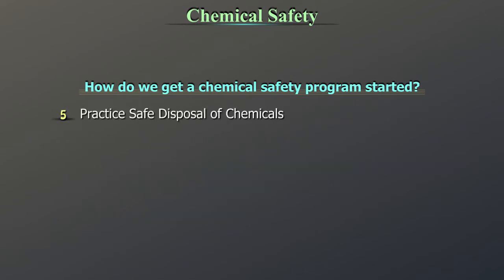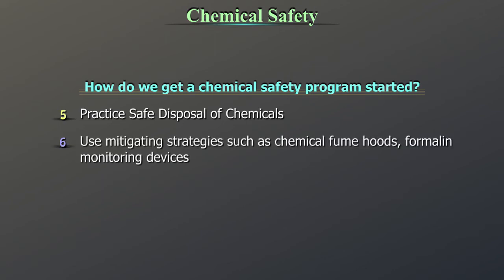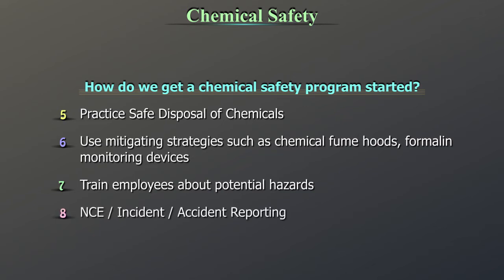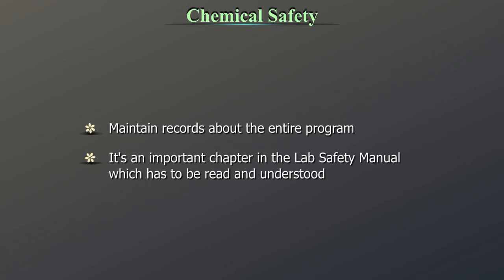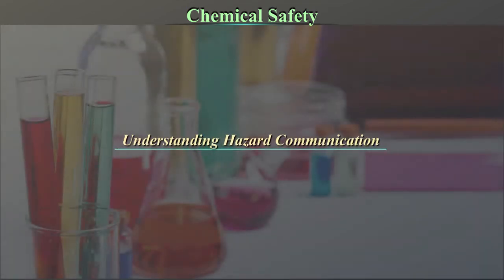Steps 4 through 8: Practice safe storage of chemicals. Practice safe disposal of chemicals. Use mitigating strategies such as chemical fume hoods and formalin monitoring devices. Train employees about potential hazards. NCE or incident/accident reporting. Maintain records about the entire program.